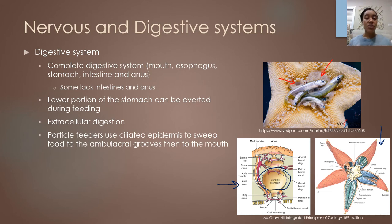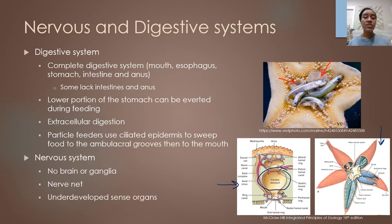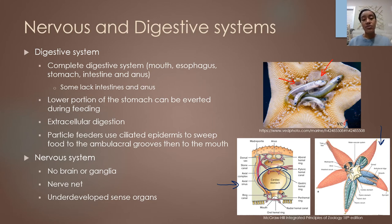Not all starfish are carnivores — some are deposit feeders or filter feeders. In these cases, they use their ciliated epidermis to sweep particulate matter towards their ambulacral grooves, and then continue to sweep food towards the mouth for ingestion. The nervous systems of echinoderms are not well developed — they have no brain and no ganglia, essentially just a nerve net, and all other sensory organs are highly underdeveloped.